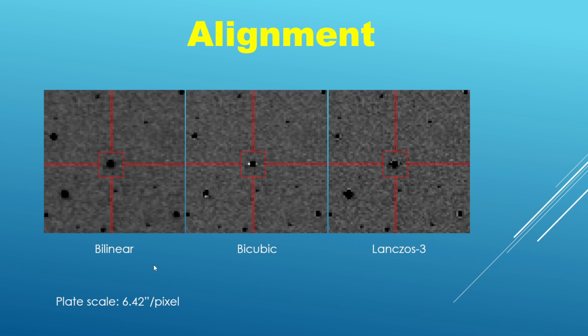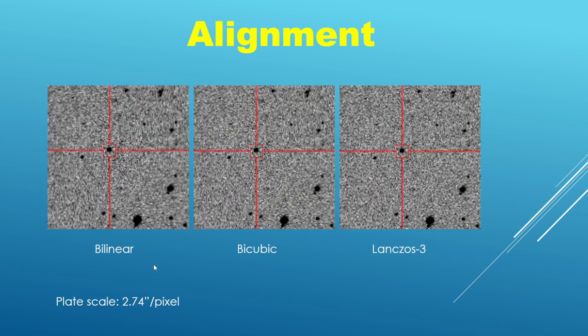As another example, here is another set of images. The plate scale is 2.74 arc seconds per pixel, so it's a little bit better sampled. In this scenario I would actually lean towards Lanczos 3.